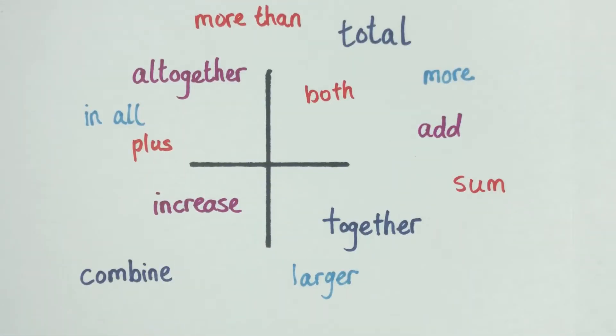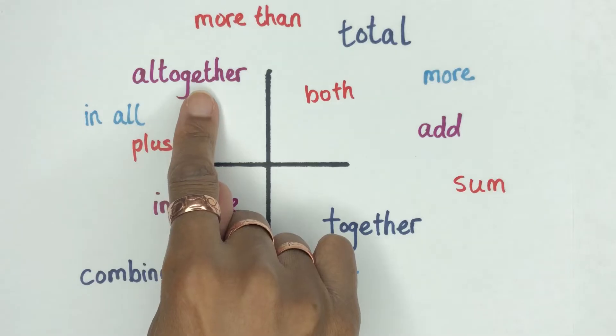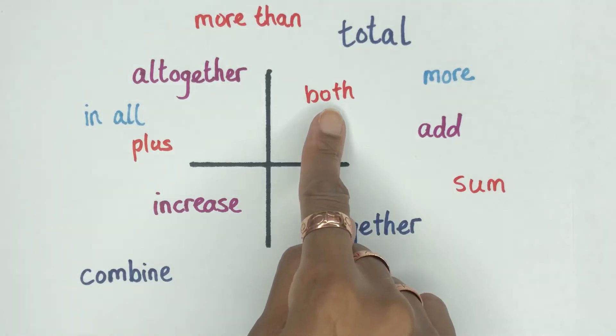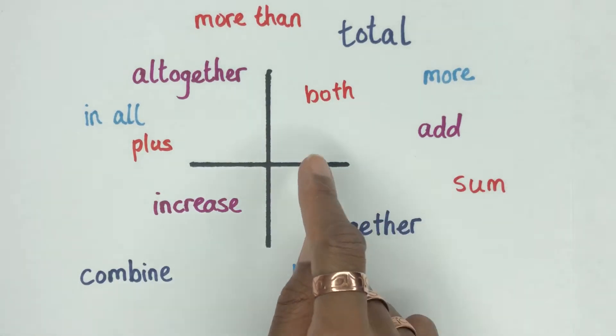So as you can see, these are the word problem terminologies for adding or addition. The most common ones being total, sum, add, sometimes they ask how many all together or in all. So you get the gist of what this means when you're adding, so that it will help you to know that if something is saying both or more than, you know that you're applying the addition method for solving.